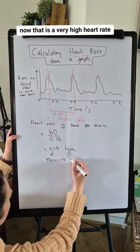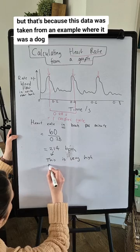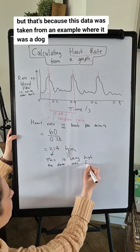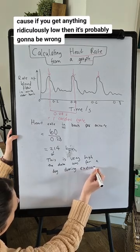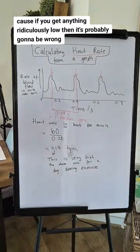Now that is a very high heart rate, but that's because this data was taken from an example where it was a dog and the dog was doing exercise. Always consider what your overall answer is though, because if you get anything ridiculously low, then it's probably going to be wrong.